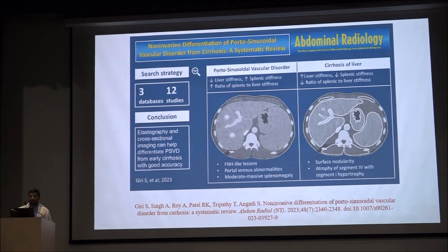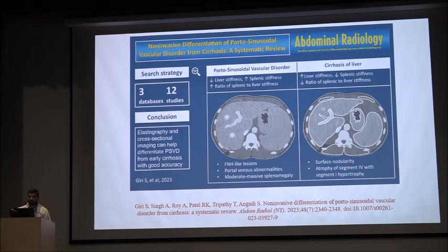A recent systematic review and meta-analysis including 12 studies showed that elastography and cross-sectional imaging can help differentiate cirrhosis from PSVD. In PSVD, there was low liver stiffness, high spleen stiffness, and a higher spleen-to-liver stiffness ratio above 1.23. In cirrhosis, there was higher liver stiffness and lower spleen stiffness compared to PSVD, with a lower ratio.